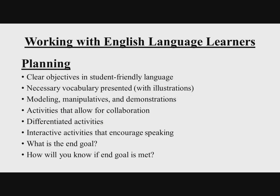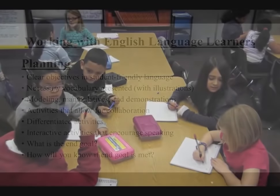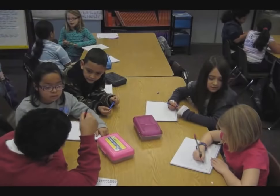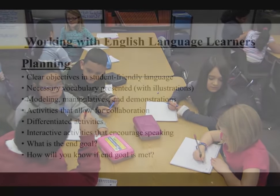Planning is a crucial step in daily instruction. For English language learners, we need to have clear objectives that are presented in student-friendly language. These objectives should be presented in both an oral and written form, so that students can refer to the objectives throughout the lesson. Necessary vocabulary must be presented, and it's helpful if the vocabulary also comes with illustrations. For an English language learner, illustrations will be very helpful.